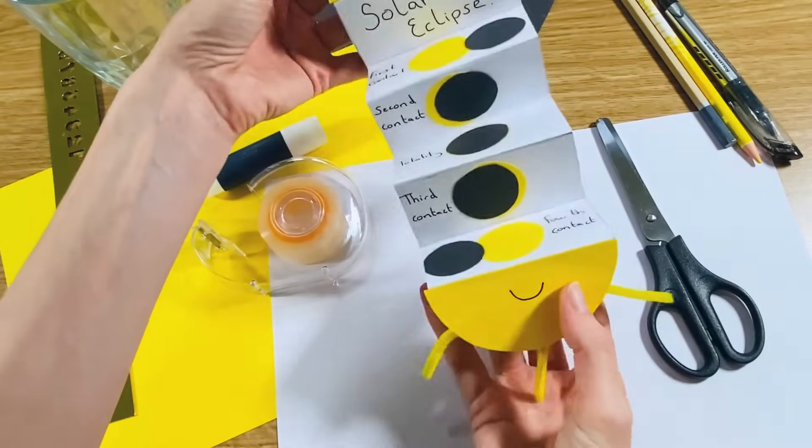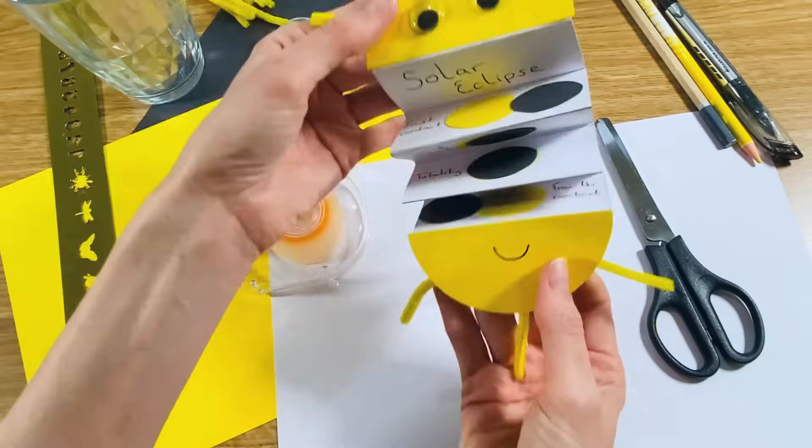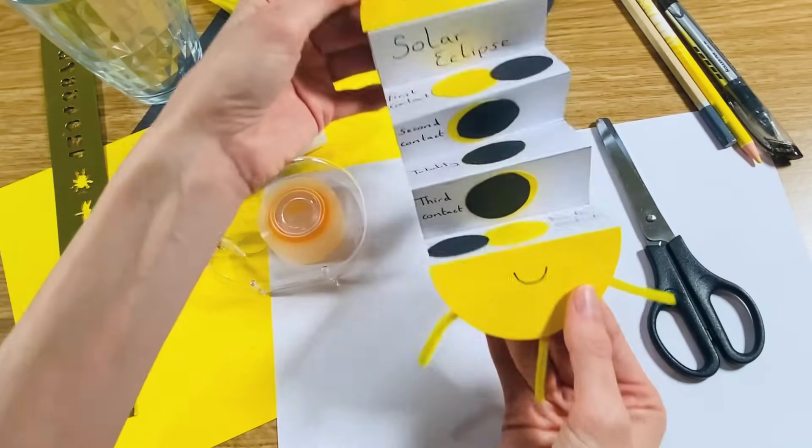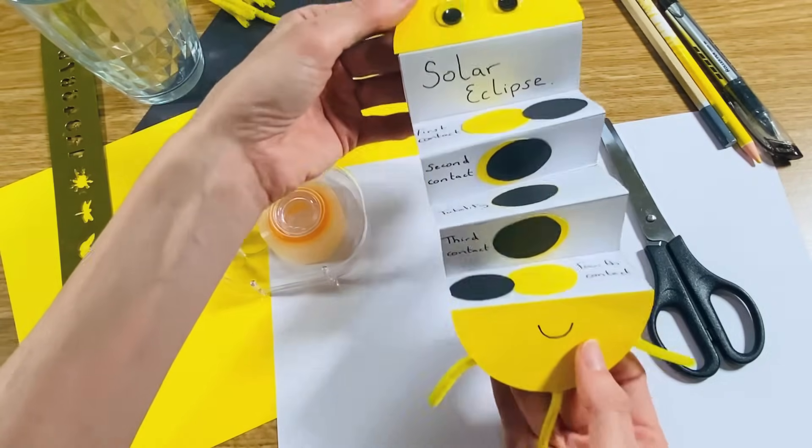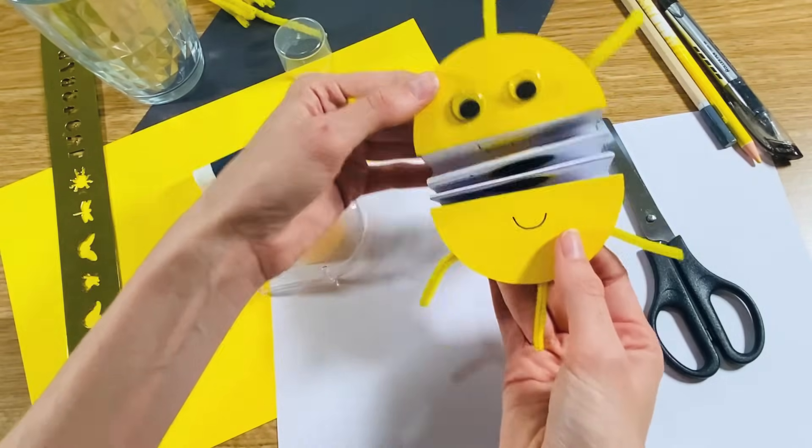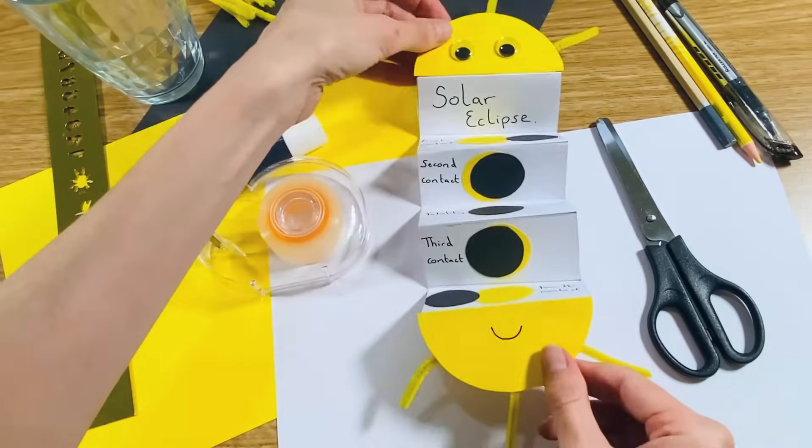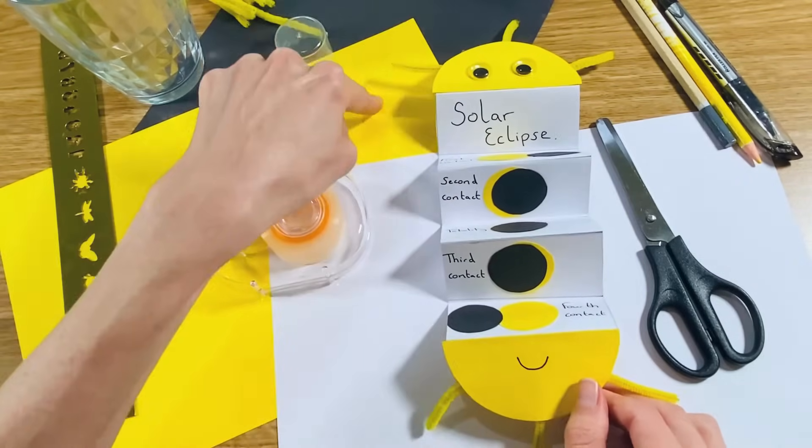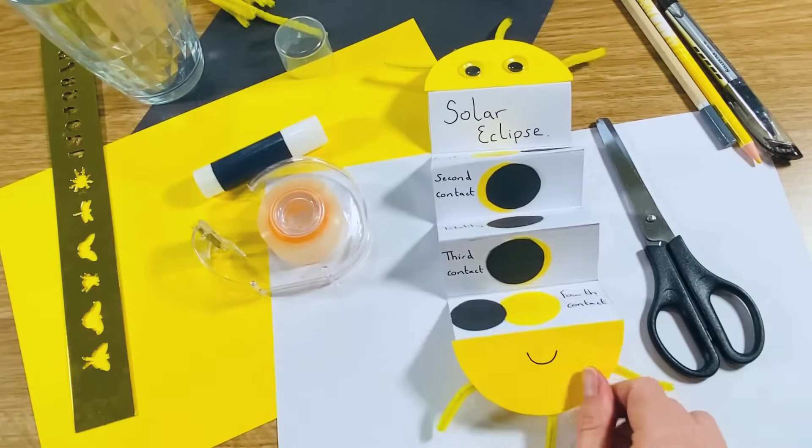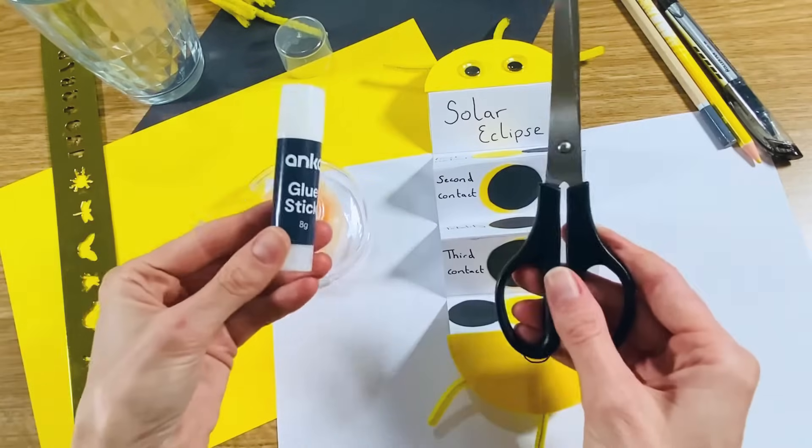In this video I'm going to be showing you how to make one of these really cute fold-out suns that show the stages of a solar eclipse. To make it you're going to need some white, yellow, and black card or paper, scissors, and glue.